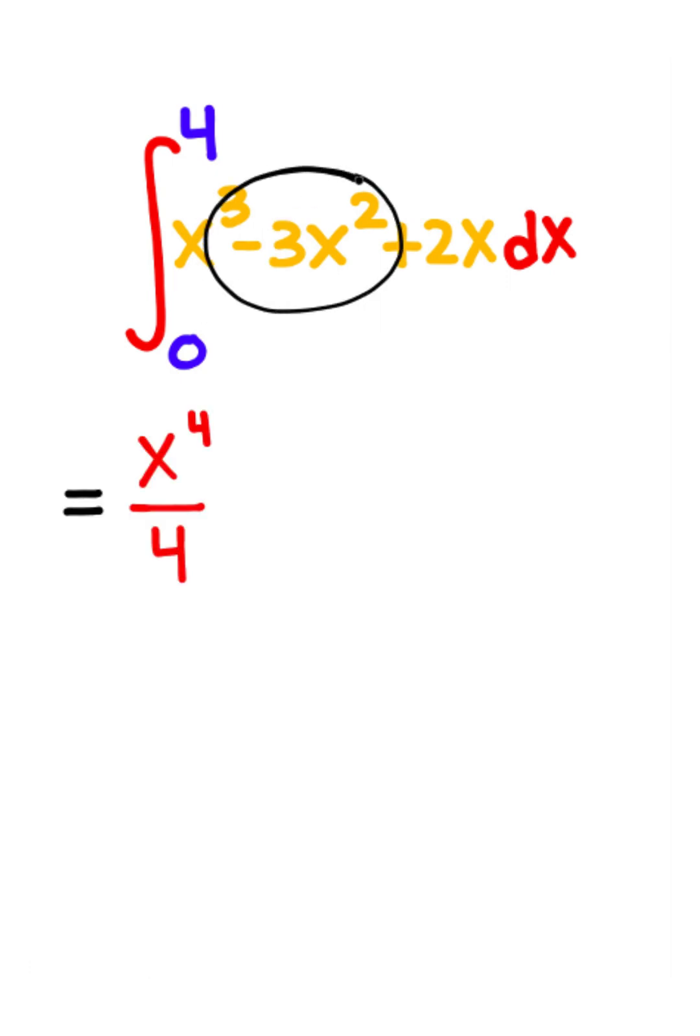Now I'll do the same thing for negative 3x squared. I'll add 1 to the exponent and divide this by 2 plus 1 which is 3.